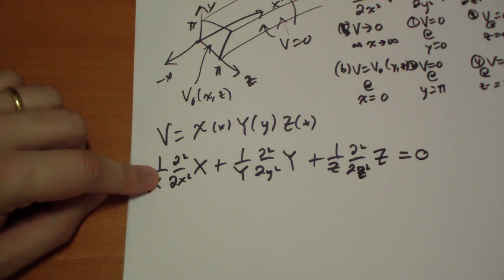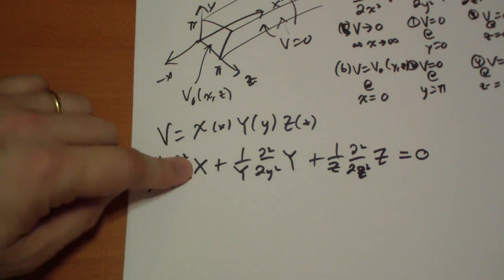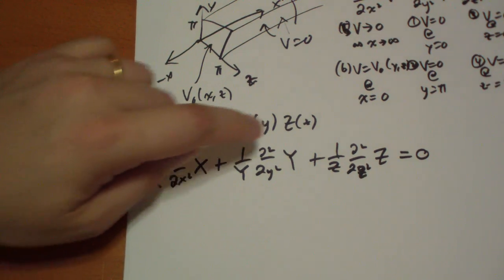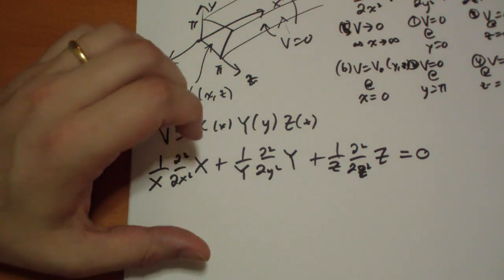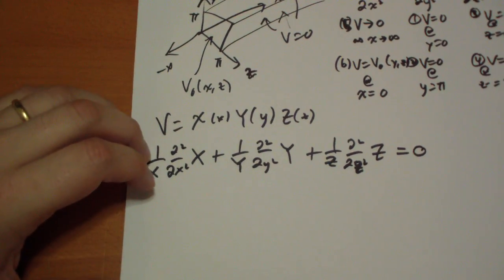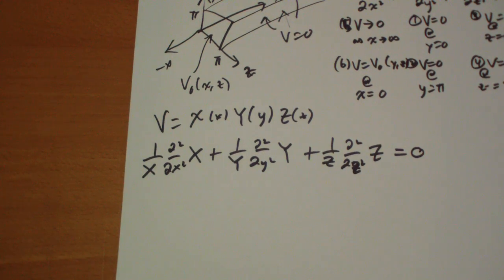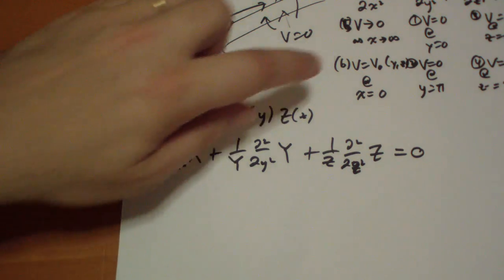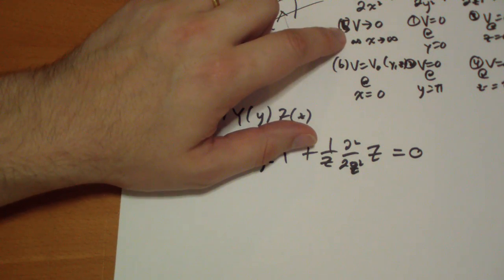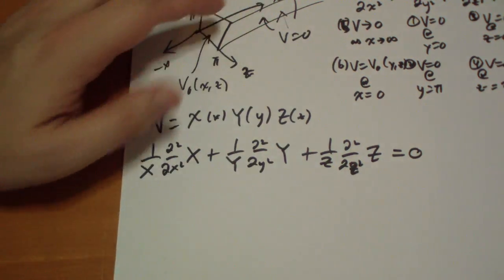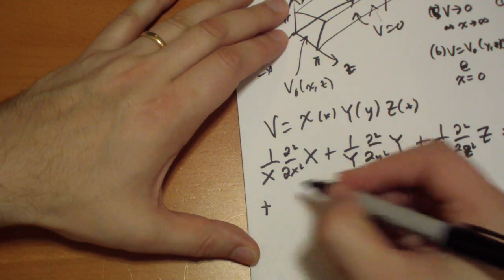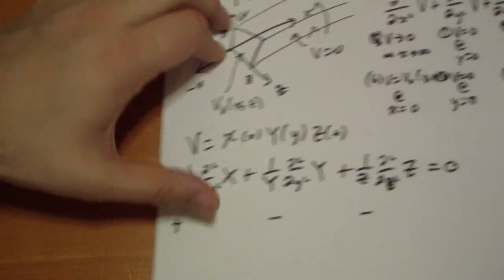And once again, you can see that because this doesn't depend anything on y or z, and this doesn't depend anything on x or z, and this doesn't depend on anything x or y, these all must be constants. And the question is, do we choose positive or negative constants for each? And hopefully, you know that we want to use that e to the kx thing and set that to zero here because it goes to infinity. So, we're going to set this to be positive and these two to be negative because we have the same kind of, we want to use the same sine function here.